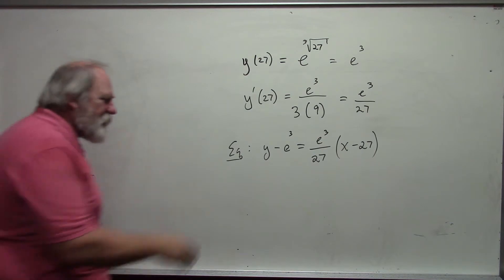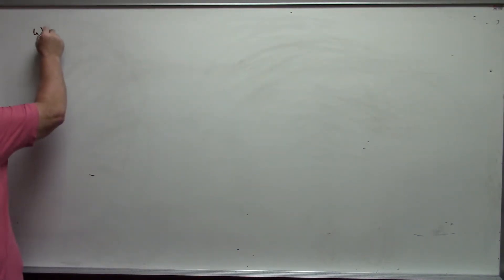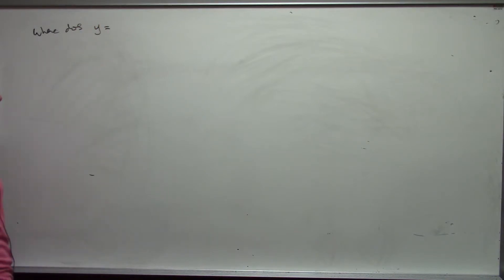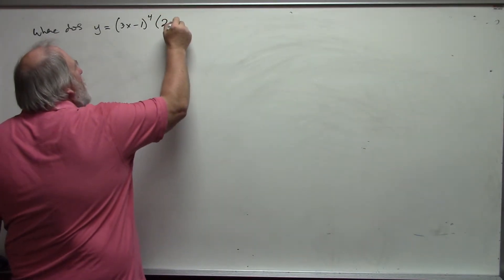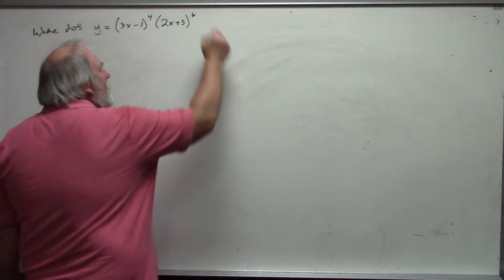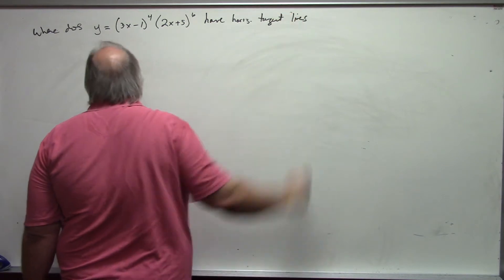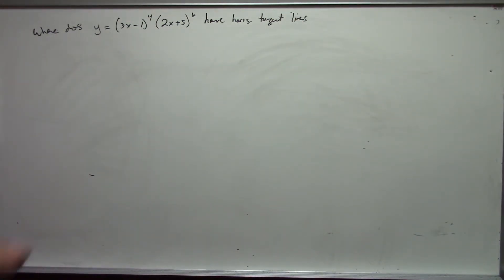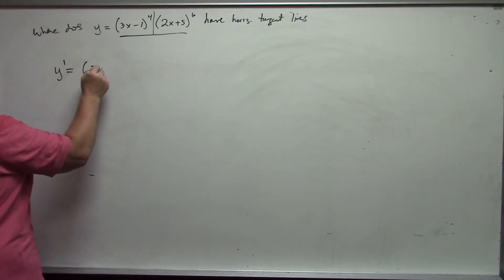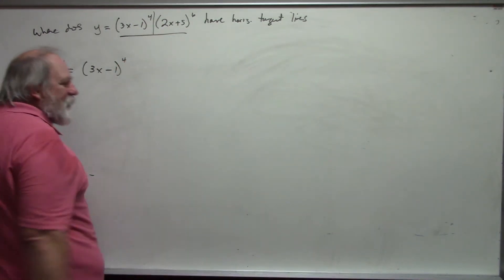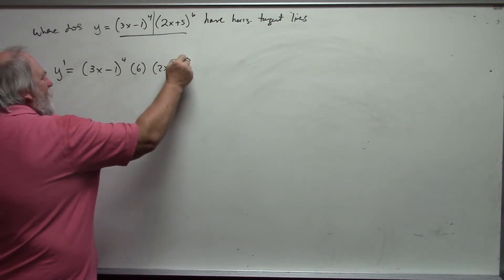Let's consider horizontal tangent lines. Suppose I want to know where y equals 3x minus 1 to the 4th times 2x plus 5 to the 6th has horizontal tangent lines. I want to know where the derivative is zero. This is a product first, so: first times the derivative of the second. The derivative of the second uses the chain rule — the outside is a power function — giving 6 times 2x plus 5 to the 5th times 2.